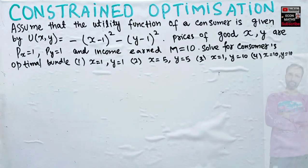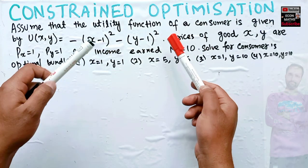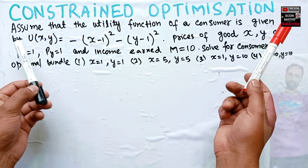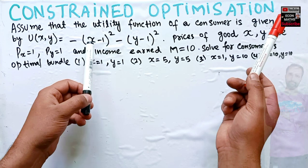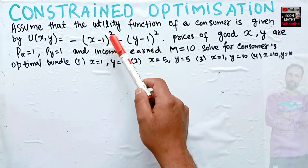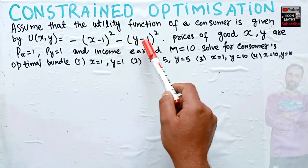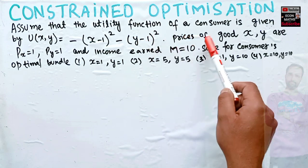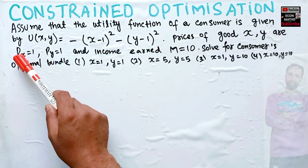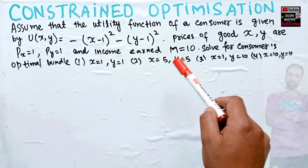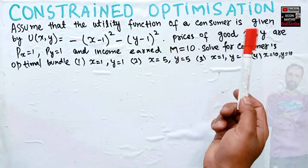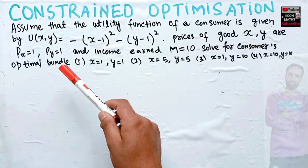Let us solve a question on constrained optimization. This question was asked by a brother on WhatsApp. The question is: assume that the utility function of a consumer is given by u(x,y) where x and y are two goods, given as minus (x minus 1) squared minus (y minus 1) squared. Prices of good x and good y are both 1, and the income of the consumer is m = 10. We need to solve for the consumer's optimal bundle.